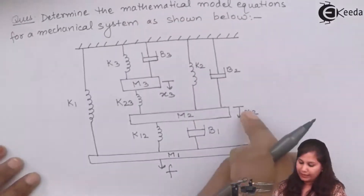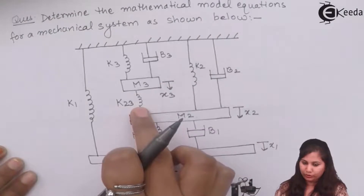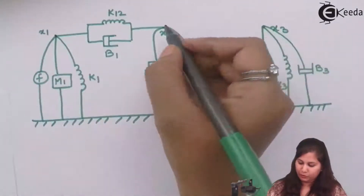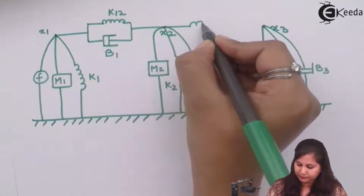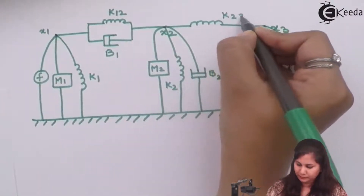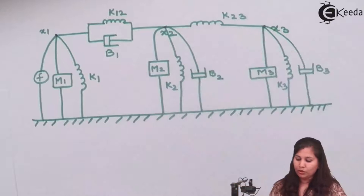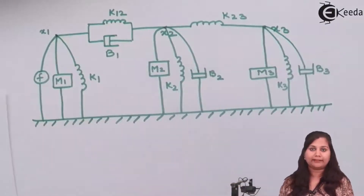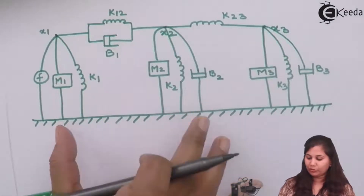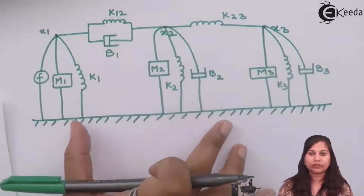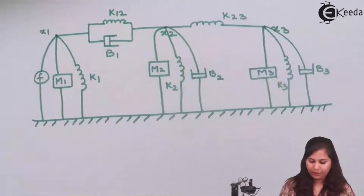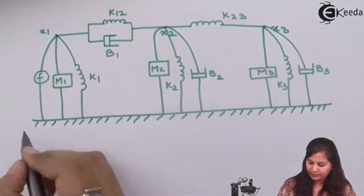Between x2 and x3 we have spring k23, so k23 is connected between these two nodes. This completes the nodal diagram of the system. Now using this nodal diagram we are going to write the equations for nodes x1, x2, and x3.